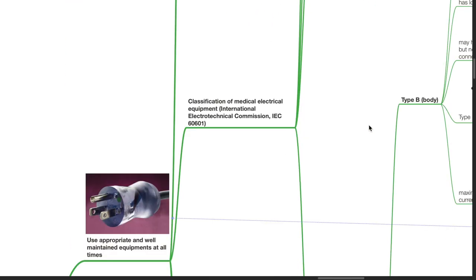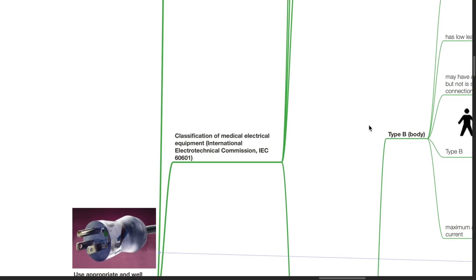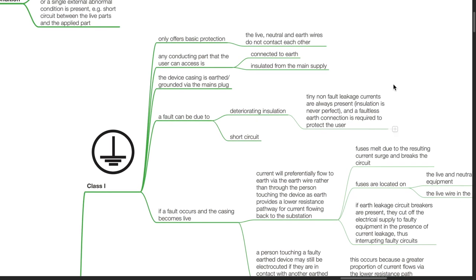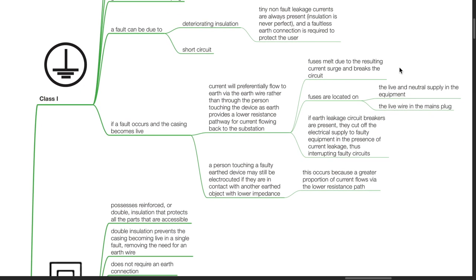Classification of Medical Electrical Equipment according to IEC 60601-1. Class 1 equipment offers basic protection where live, neutral, and earth wires do not contact each other. The device casing is grounded via the mains plug. A fault can be due to deteriorating insulation or short-circuit. Tiny non-fault leakage currents are always present as insulation is never perfect, and a faultless earth connection is required to protect the user. If a fault occurs and the casing becomes live, current will preferentially flow to earth via the earth wire rather than through the person.